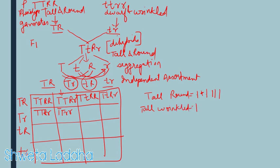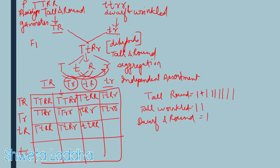Going through the F2 Punnett square: combinations TTRR, TTRr, TtRR, TtRr and their equivalents are all tall and round, giving us 9 tall and round plants. Then capital T capital T small r small r gives tall and wrinkled — that is one. Small t capital T small r small r gives another tall and wrinkled. Capital T small t small r small r gives yet another tall and wrinkled, totaling 3 tall and wrinkled plants.